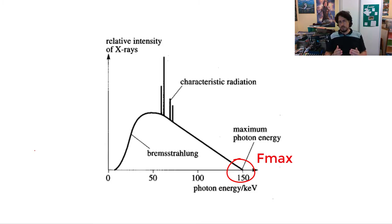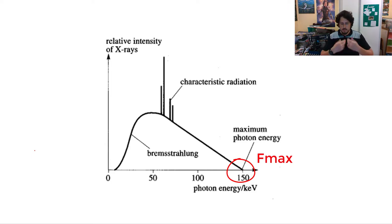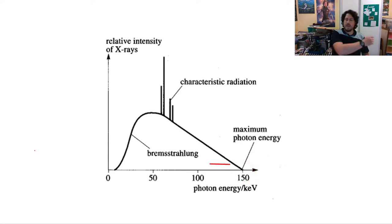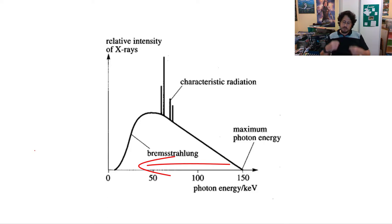f_max is the maximum frequency of X-rays that are going to be produced — the maximum energy of X-ray produced. That comes from when an electron crosses the evacuated tube and slams into a tungsten nucleus, or some nucleus in the metal target, and all of its kinetic energy is then transferred into an X-ray. For everything back towards the origin of the graph, you've got electrons that have slowed down but not totally stopped, and as a result you're getting a range of different energies.